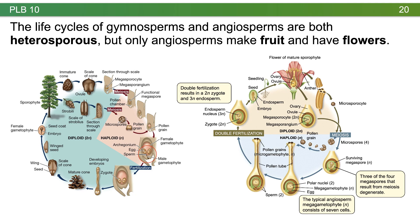Heterospory is a modification of the alternation of generations life cycle where there are two sizes of spores. The smaller microspore develops into the micro gametophyte — in seed plants, this is pollen. In gymnosperms, the megaspore undergoes extensive mitotic division into a relatively large structure with archegonia; in angiosperms, it undergoes only a few rounds to produce seven cells and eight nuclei. All seed plants are heterosporous, and in angiosperms we additionally have fruit and flowers.